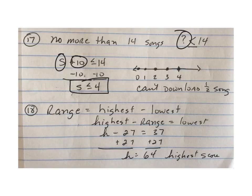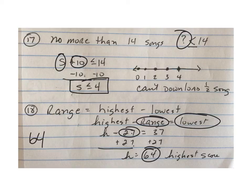Number 18, range is your highest minus your lowest. So it told you what the range was, it said the range was 27, and that the lowest amount was 37. So your highest minus the range would equal 37. If you add 27 to both sides, you get a high score of 64. And if you were to do 64 minus 37, that would equal your range of 27.